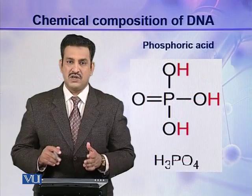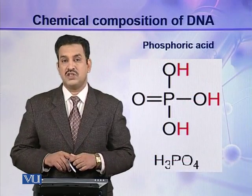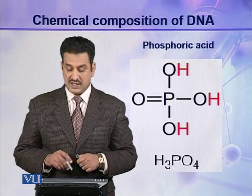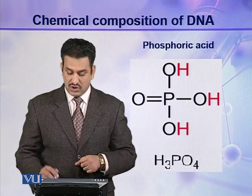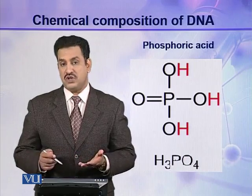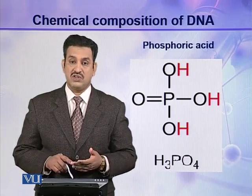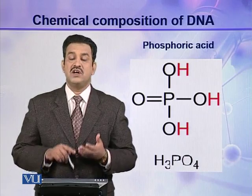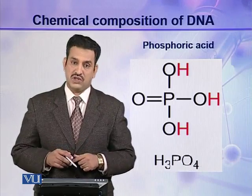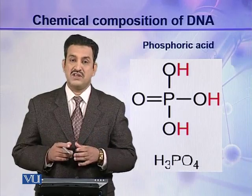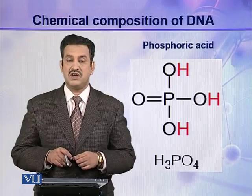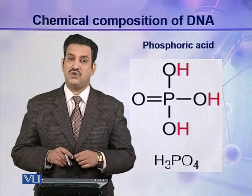The third component of a deoxyribonucleotide is phosphoric acid. Phosphoric acid has three hydroxyl groups, so it can form three bonds with other molecules. All three components — deoxyribose sugar, a nitrogenous base, and phosphoric acid — combine together to make a deoxyribonucleotide, which is the building block of the DNA molecule.